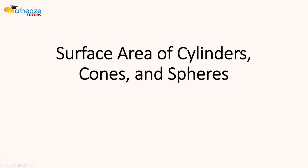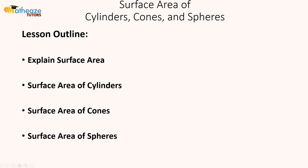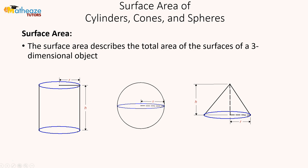In this lesson we're going to examine surface area of cylinders, cones, and spheres. Here's our lesson outline: we're going to explain surface area and look at how to identify or derive the surface area of cylinders, cones, and spheres. Generally, surface area describes the total area of all the surfaces of a three-dimensional object or shape. You can see here that we have three-dimensional shapes: a cylinder, a sphere, and a cone.